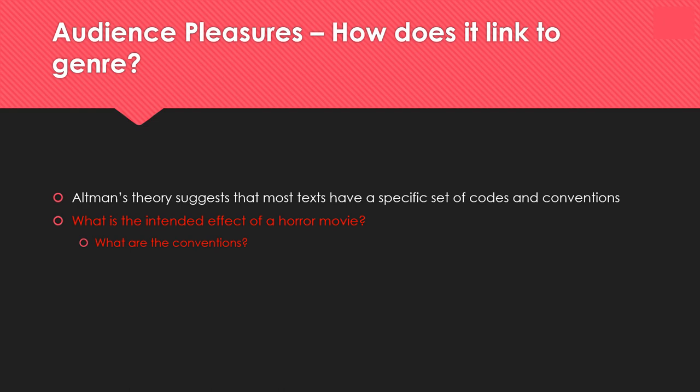Applying the audience pleasures theory: Altman suggests that most texts have a specific set of codes and conventions. The intended effect of a horror movie is a visceral pleasure — to feel scared or excited. The conventions in horror films tend to include dark lighting, eerie music, props such as sharp knives and dangerous weapons. You might also have a lot of screams and particular types of characters — people are almost certainly going to be killed.